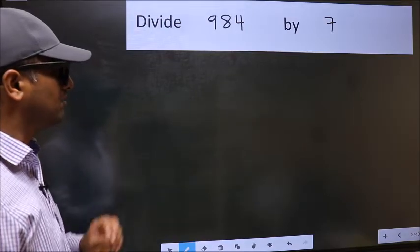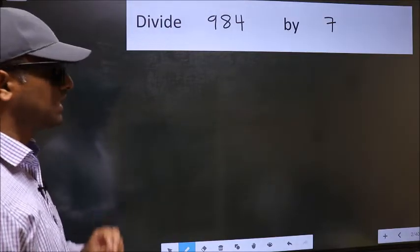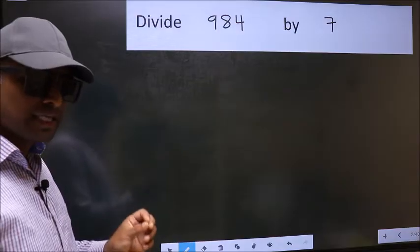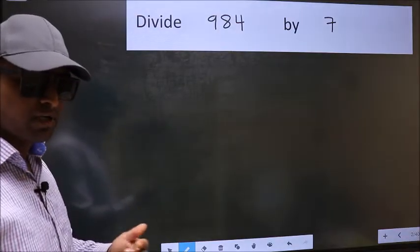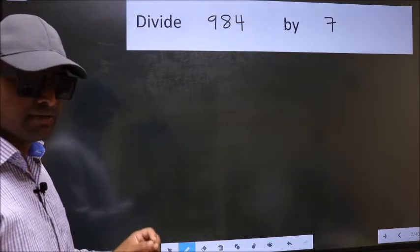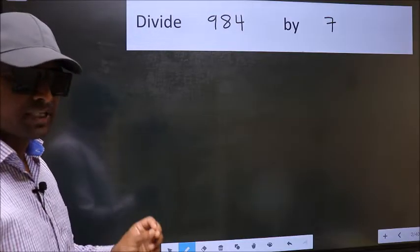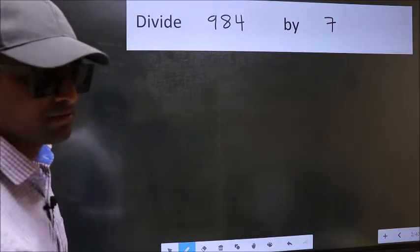Divide 984 by 7. While doing this division, many do this mistake. What is the mistake that they do? I will let you know. But before that, we should frame it in this way.